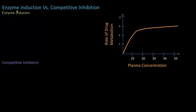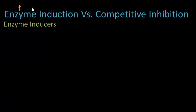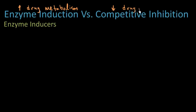Let's start off by differentiating enzyme induction from competitive inhibition. We can do this with just three words. The three words for enzyme induction are 'increased drug metabolism,' and conversely, for competitive inhibition, the three words would be 'decreased drug metabolism.'